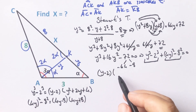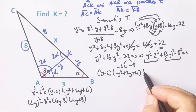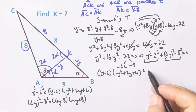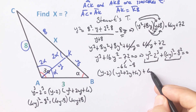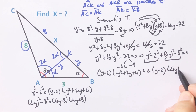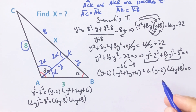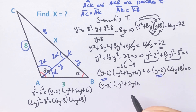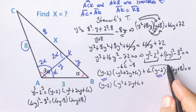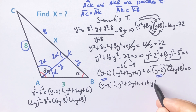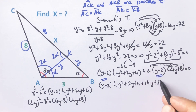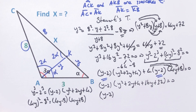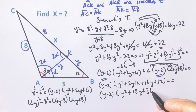So we have (y minus 2)(y squared plus 2y + 4) plus 4(y minus 2)(4y plus 8) equals zero. Taking (y minus 2) as a common factor: (y minus 2)(y squared + 16y + 36) equals zero.